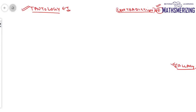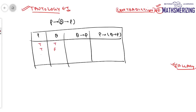Take the statement P→(Q→P). We write the truth table with columns P, Q, Q→P, and P→(Q→P). Q→P is false only when Q is true and P is false, so its values are: true, true, false, true. Now P→(Q→P): true→true = true, true→true = true, false→false = true, false→true = true. This statement is true for all values of P and Q, so P→(Q→P) is a tautology.